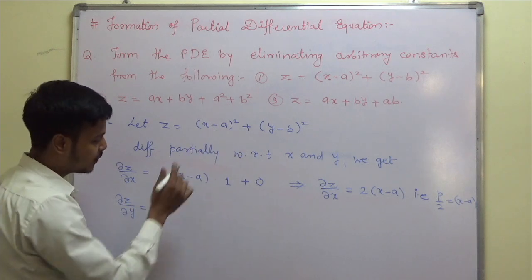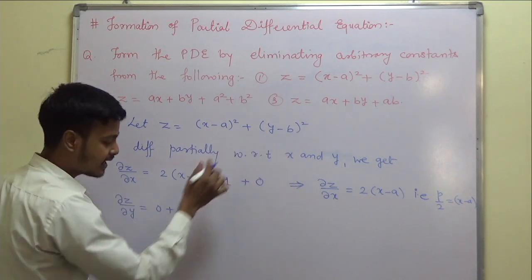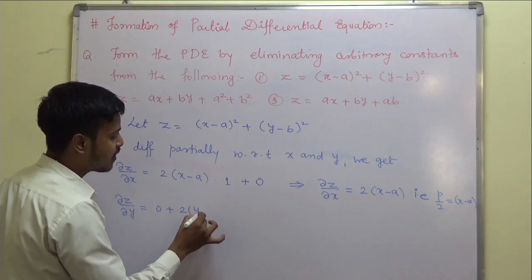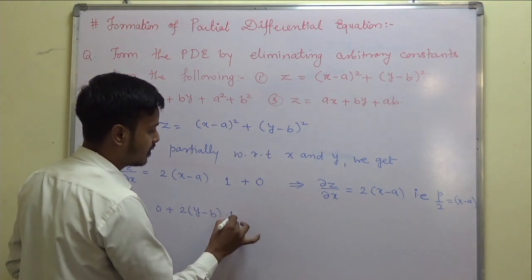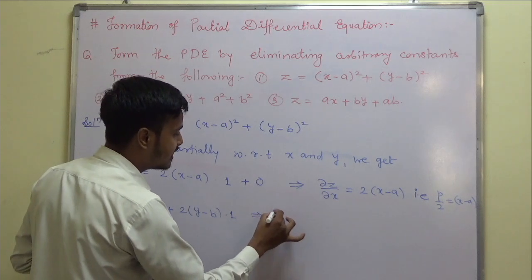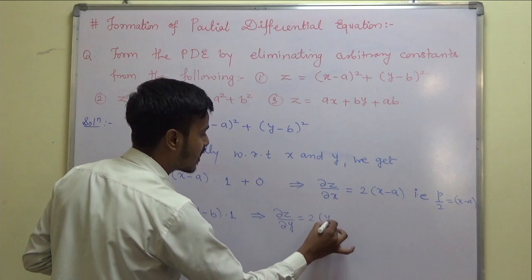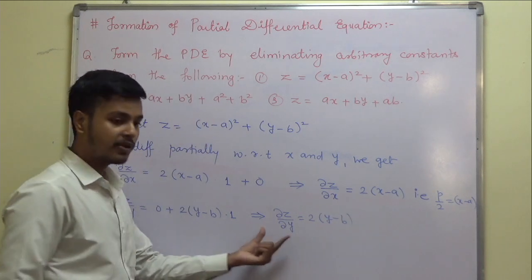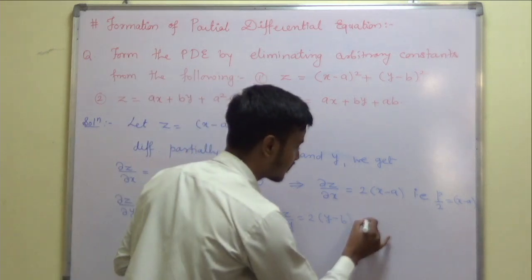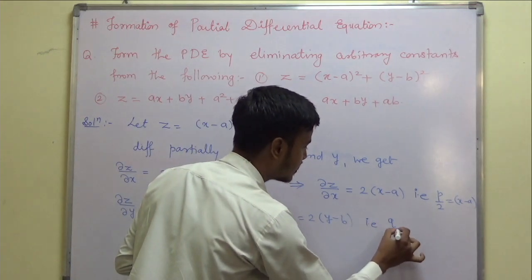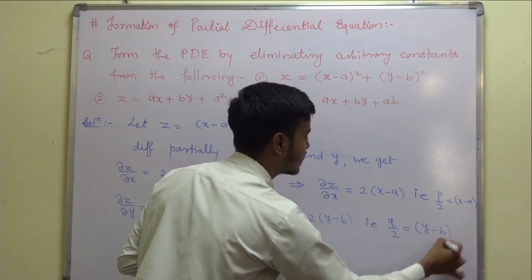Likewise, differentiating with respect to y: del z by del y — is there a term of y? Yes. So we get 2 times (y minus b) into 1. Therefore del z by del y equals 2(y minus b). This notation is called q. So q by 2 equals (y minus b).